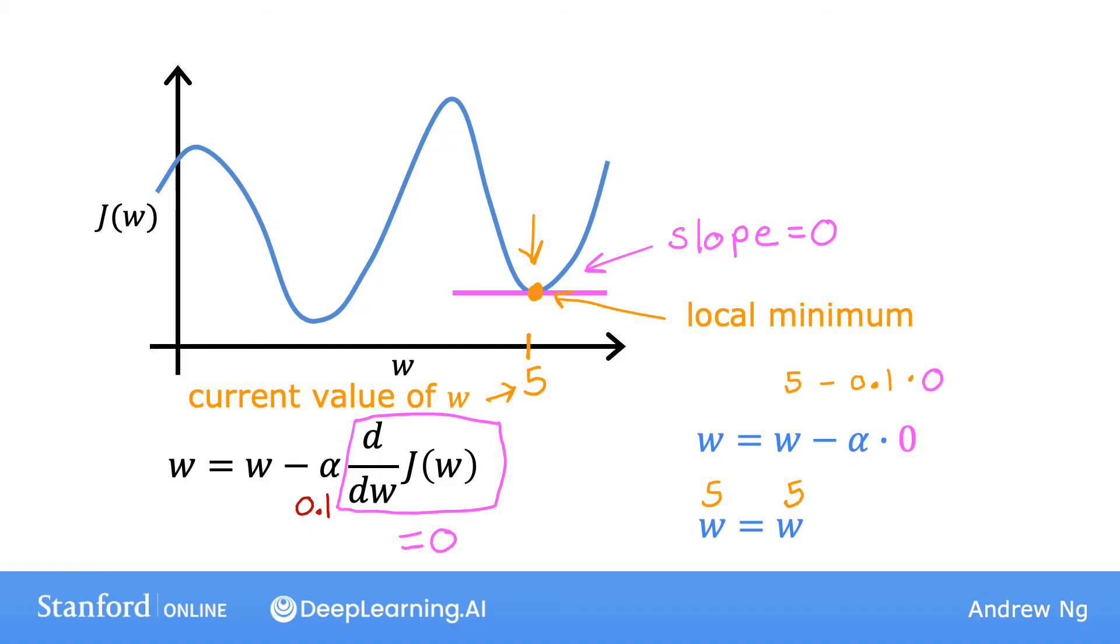So if your parameters have already brought you to a local minimum, then further gradient descent steps do absolutely nothing. It doesn't change the parameters, which is what you want, because it keeps the solution at that local minimum.